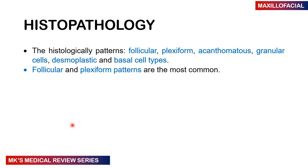On histopathology, different patterns can be seen: follicular, plexiform, acanthomatous, granular cell, dysplastic cell, and basal cell types. The follicular and plexiform types are the most common. For undergraduate exams, detailed histopathology patterns are unlikely to be tested.